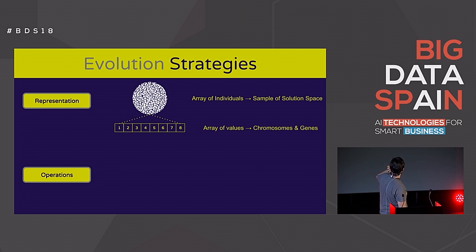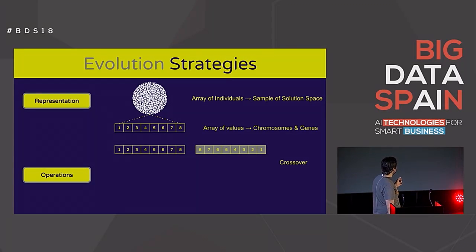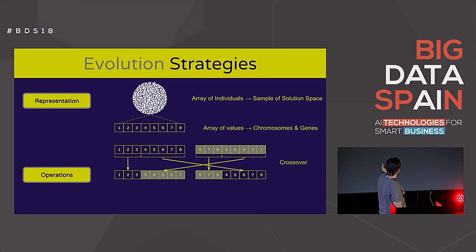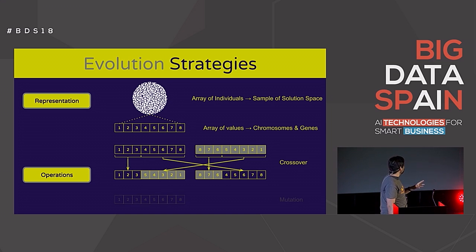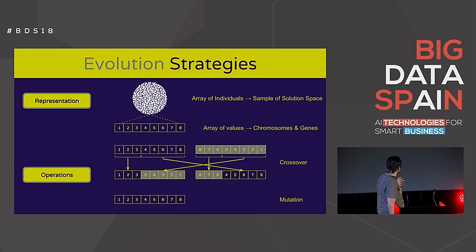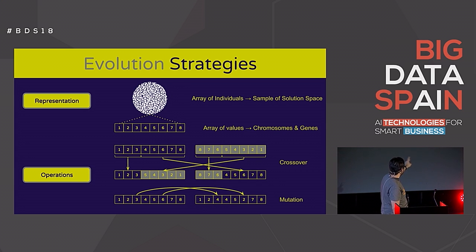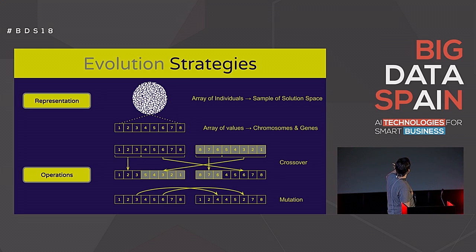When you go for evolution strategies, we only have two operations: crossover and mutation. Crossover is the traditional genetic operation — you have two individuals, select parts of the chromosome, exchange genes, and get two new individuals. These are new performers that could be better or worse than their parents, but you now have new solutions to evaluate. Mutation increases the entropy of the system by making changes in specific genes in a probabilistic or random way. This is the traditional approach of evolution strategies.